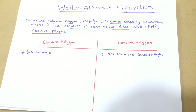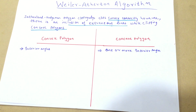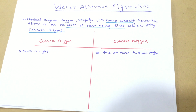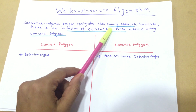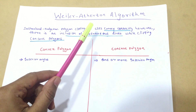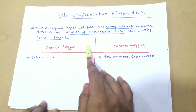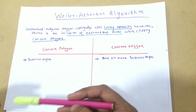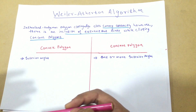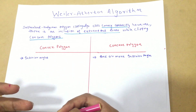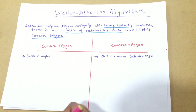The main problem with the Sutherland-Hodgman polygon clipping algorithm was that it clipped only the convex polygons correctly. However, there was an inclusion of unnecessary lines while we clipped the concave polygons.